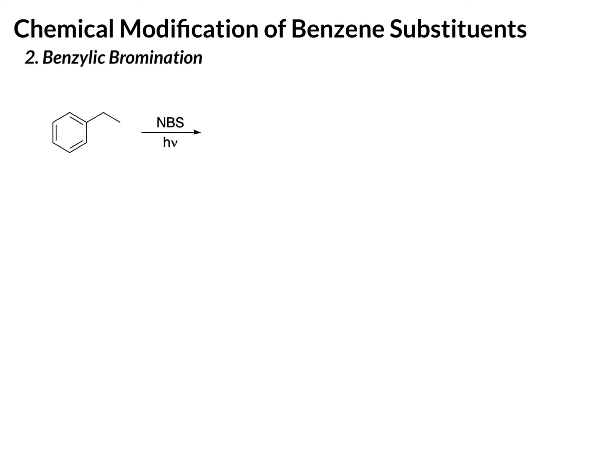This next reaction should be a little bit familiar. This is a benzylic bromination, and you may remember this from Organic One, talking about allylic brominations. So if you have a double bond and a hydrogen at the allylic position, if you treat that with NBS and light, we can brominate that allylic position.